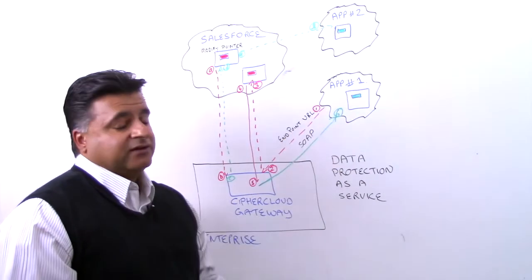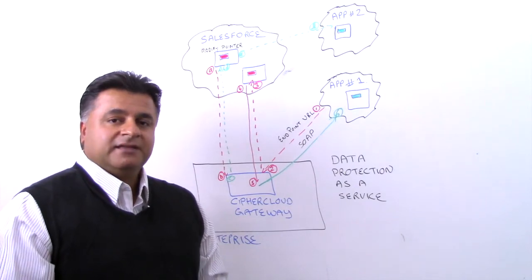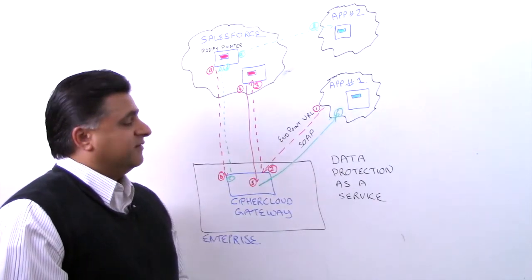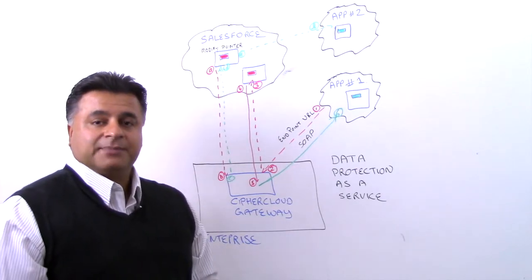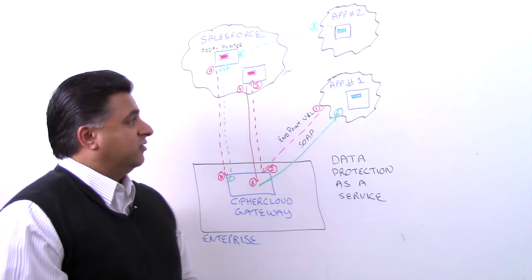Then that application in the cloud can go ahead and do its processing or whatever those next steps are. That's one example of changing the endpoint URL, and we've done that with quite a few applications that rely on Salesforce for its transactions.